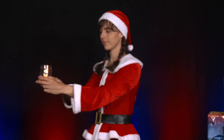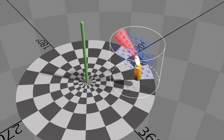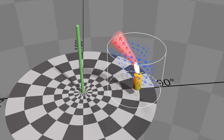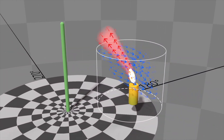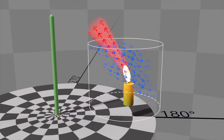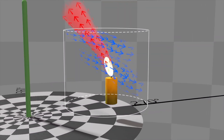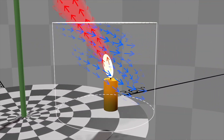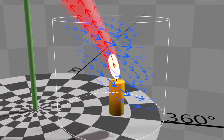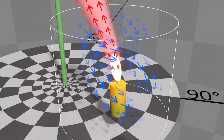The glass exerts a force on the air to make it rotate as well. The cold, slightly denser and therefore slightly heavier air is pushed downwards or outwards in the glass. The warm, less dense and therefore lighter air is pushed inwards or upwards in the glass.